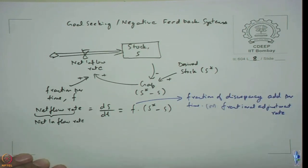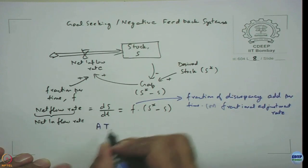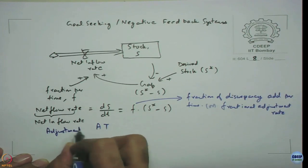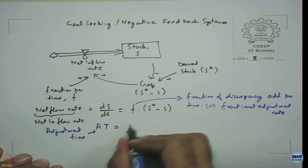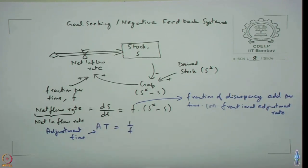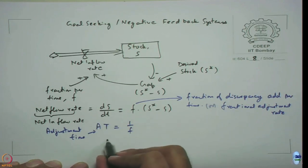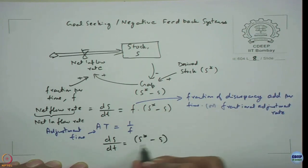We can also denote tau, which is nothing but the adjustment time. This can be defined as just 1 over f. If instead of fractions, time is more convenient to us, we can define adjustment time as 1 over f and rewrite the original equations as ds by dt equals S star minus S divided by tau. Tau is the symbol for adjustment time.